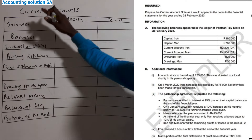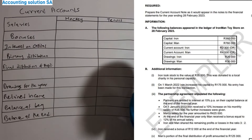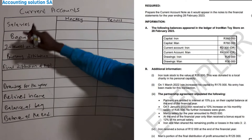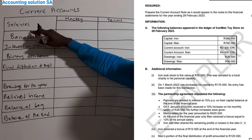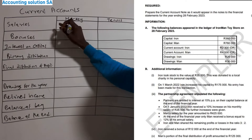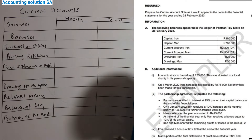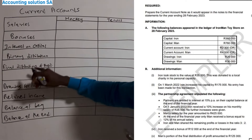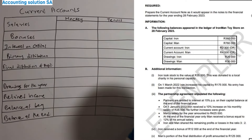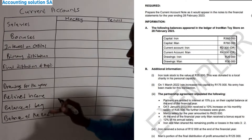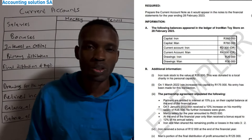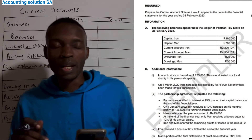Before we read all of the information, here is the format you are going to use — you must know this format. We start with salary, then bonus for each partner separately, after that interest on capital, primary distribution, final distribution, and so on.